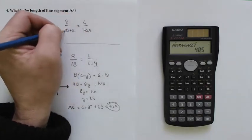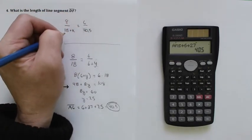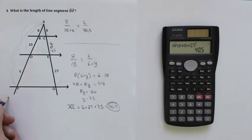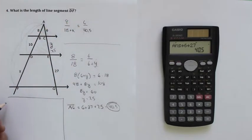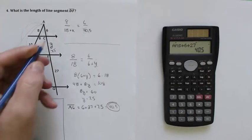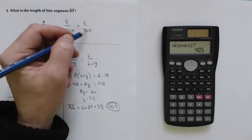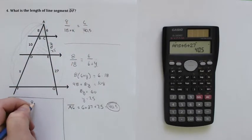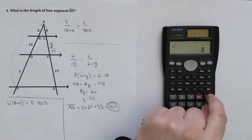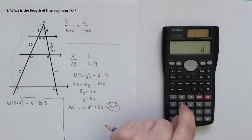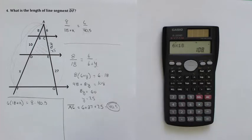I'm going to go 6 times 18 plus X. I'll do it over here. So, 6 times 18 plus X is equal to, this one times this one is equal to that one times that one, 8 times 40.5. We're going to simplify 6 times 18, we know it's 108, so that's 108.